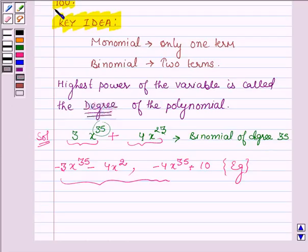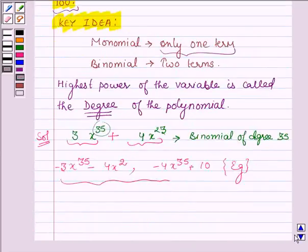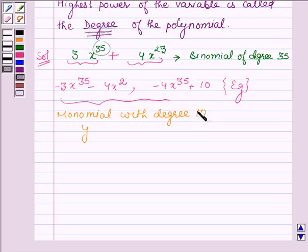Now we are required to write the monomials whose degree is 100. Monomials are the algebraic expressions which have only one term. Therefore, let the variable be y, and here we are writing the monomial with degree 100 — that is, a polynomial whose degree is 100.